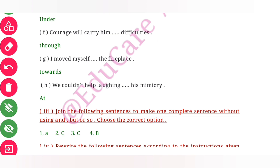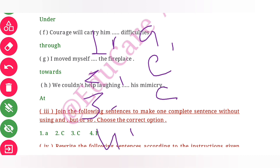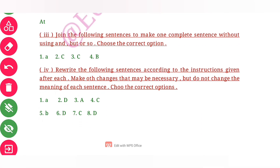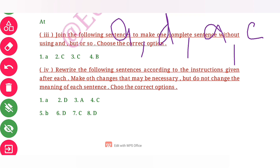Join the following sentences to make one complete sentence without using 'and' or 'but'. Choose the correct option. The answers are: first is option C, second is option C, third is option C, fourth is option B, fifth is option B, sixth is option D, seventh is option C, eighth is option D.